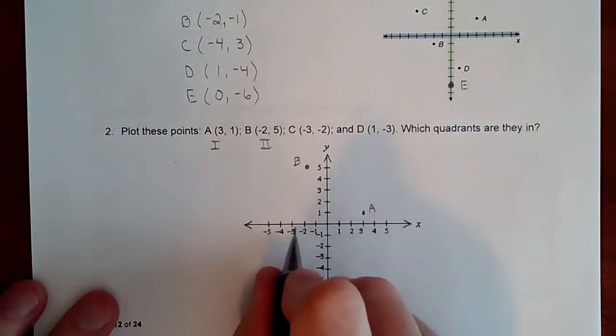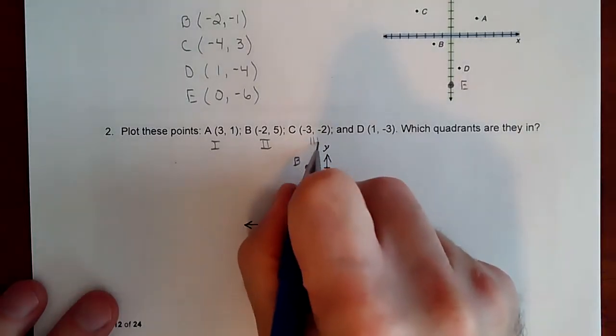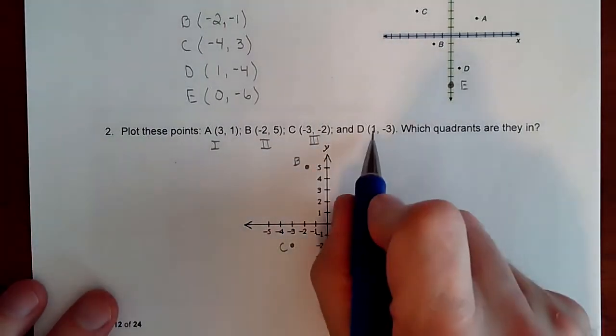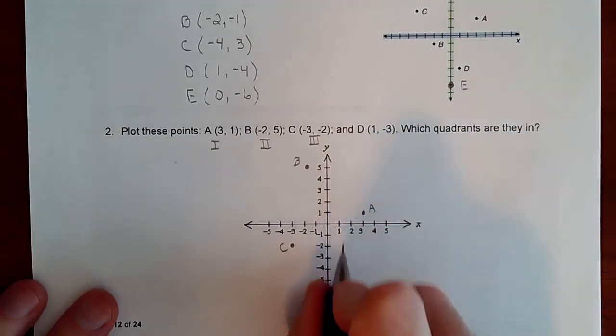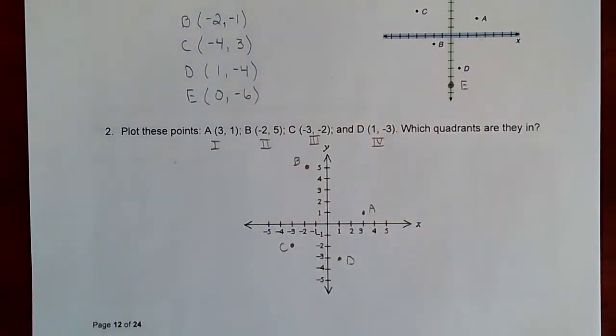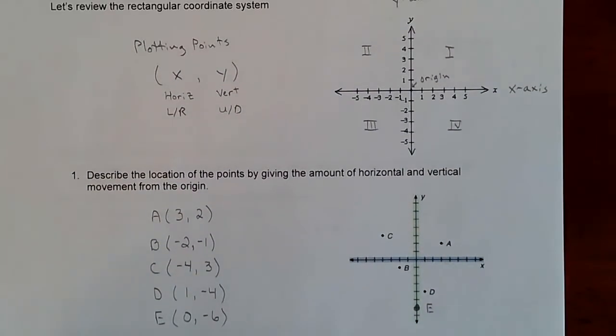Point C is at (-3, -2), so left three, down two. Point C is in the third quadrant. And you got to use Roman numerals to represent the quadrants. And then point D is right one, down three, at (1, -3). So quadrant four. That's just a little bit of some terminology, some names, some quadrants, and how you plot some points.